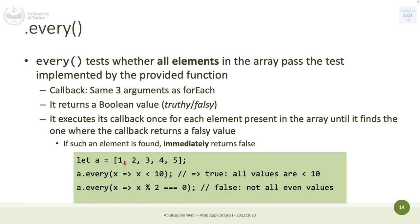The callback in 'every' always returns a boolean — true if the test is successful, false if not. It executes once for each element until it finds one that returns false. For example, with [1, 2, 3, 11], it executes for 1, 2, 3, and at 11 it stops because that element makes the condition false, immediately returning false regardless of how long the array is.